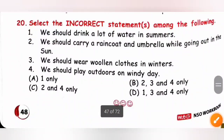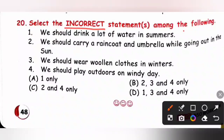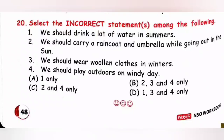Last question. Select the incorrect statements. Statement 1 — we should drink a lot of water in summer: correct. Statement 2 — we should carry a raincoat and umbrella while going out in the sun: incorrect. Statement 3 — we should wear woolen clothes in winter: correct. Statement 4 — we should play outdoors on a winter day: incorrect. So statements 2 and 4 only are incorrect. Option C is the correct answer.